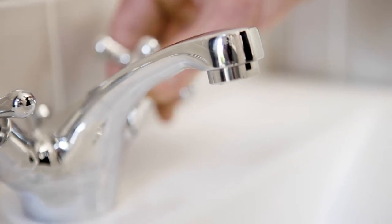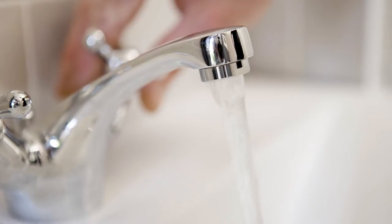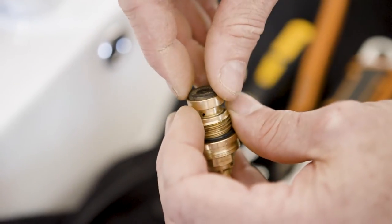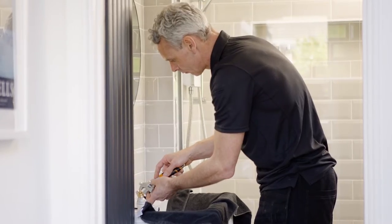If you have traditional taps that turn on by twisting the handle, perished washers may cause a drip. So here's an easy guide to fixing it yourself.